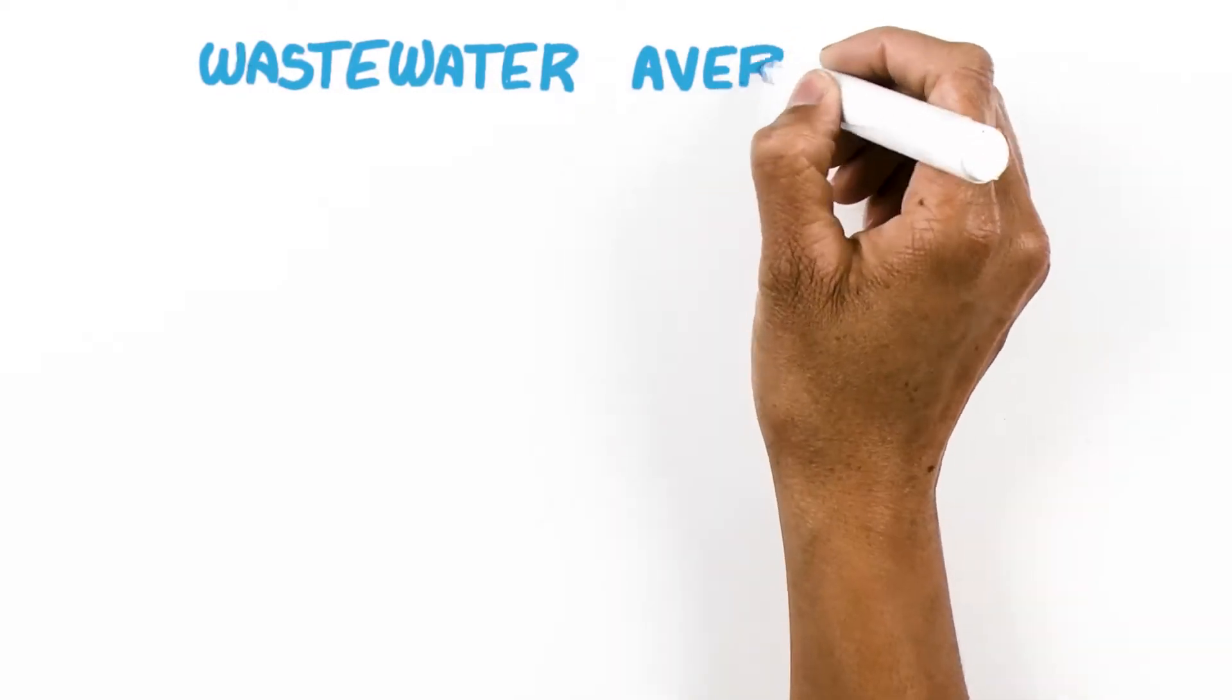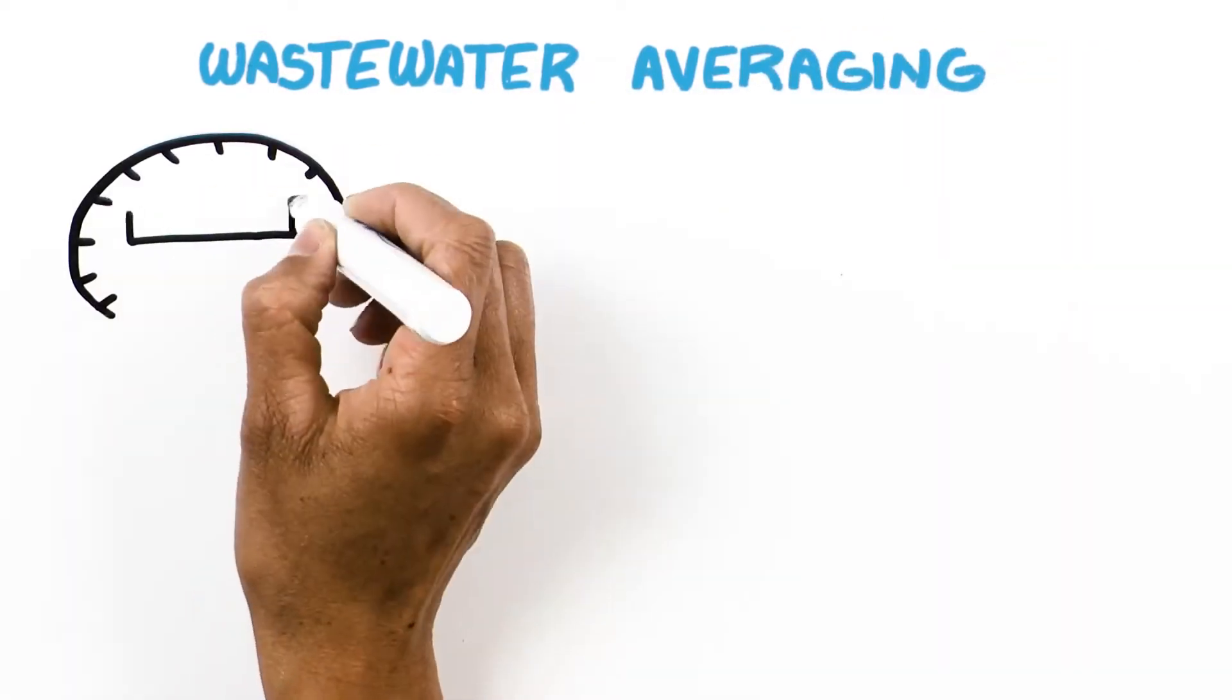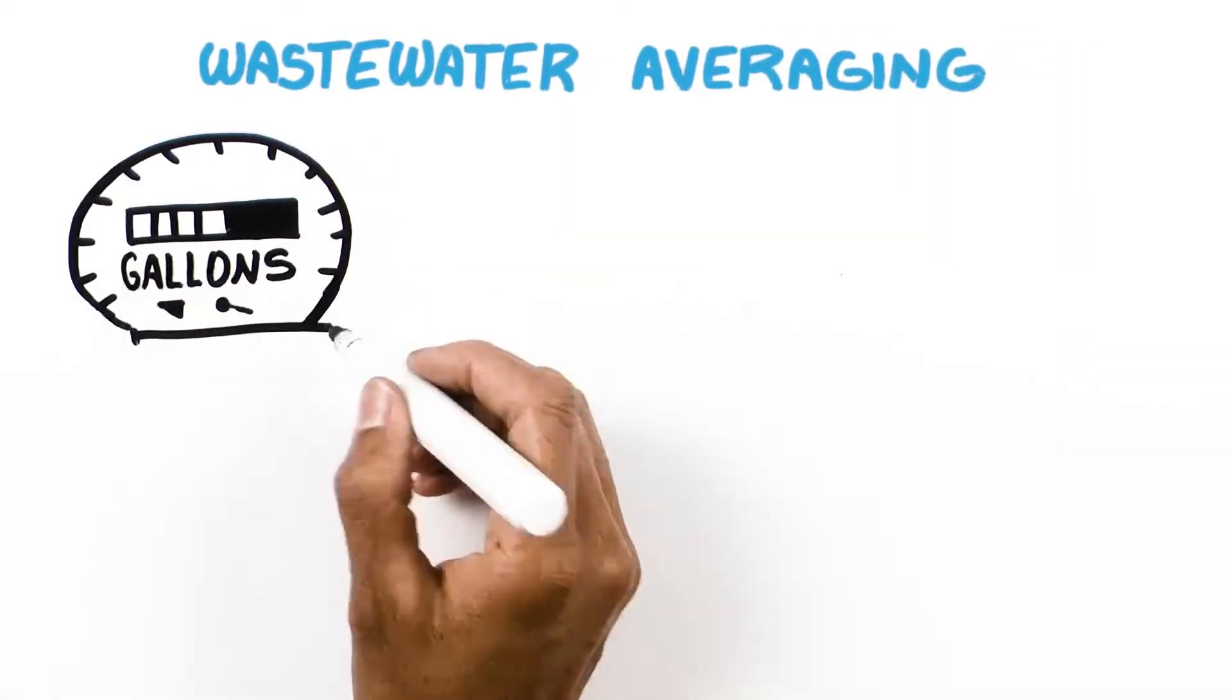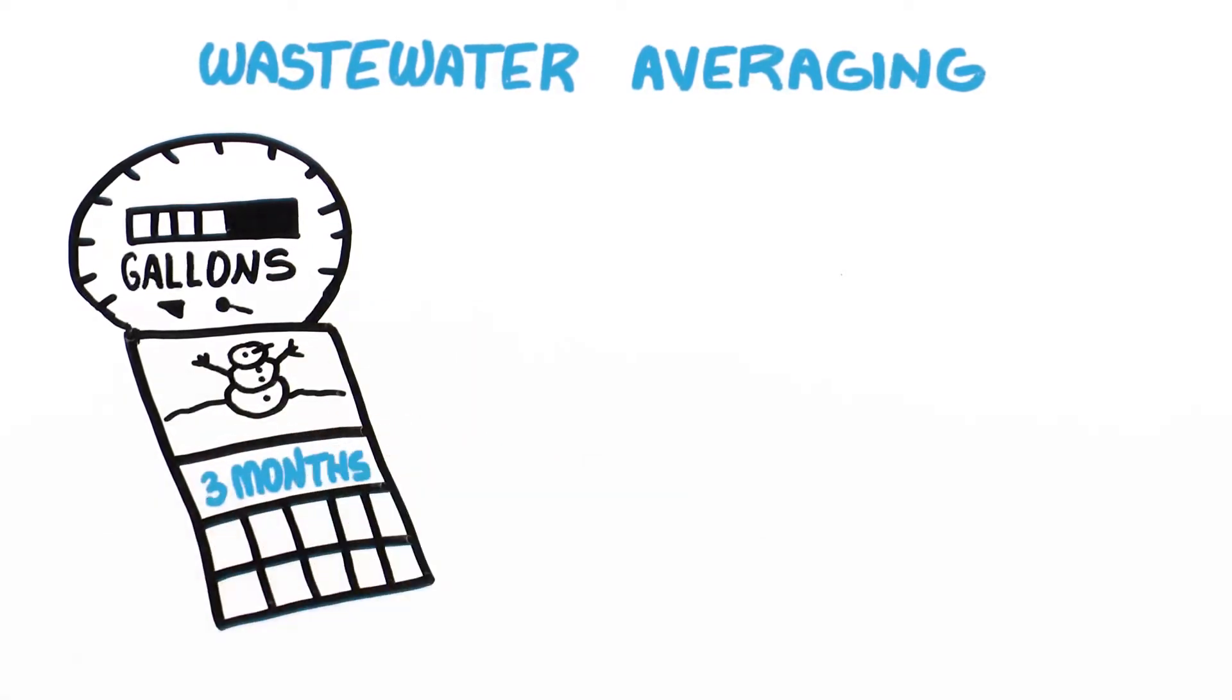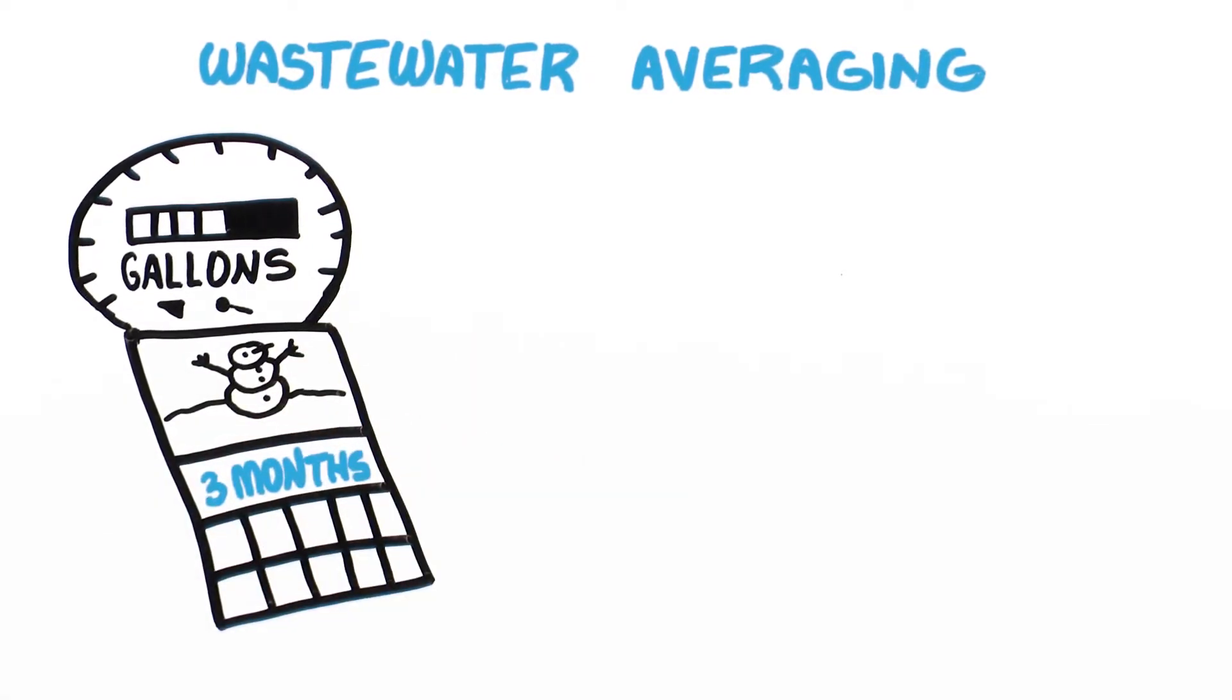We use a method called wastewater averaging, based on meter readings for the clean water you use. The meter readings are taken over the course of three winter months, known as the wastewater averaging period.